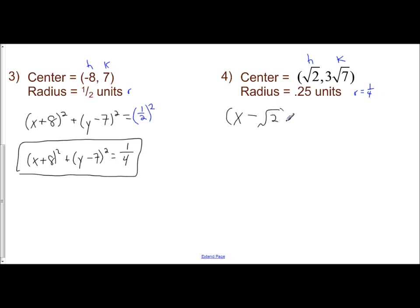All you do is x minus your h. Well, here, my h is radical 2. And square that. All I do is y minus my k. So y minus 3 radical 7. And square that. So was it any more difficult to have radicals as your center? No. It looks more complicated, but you just plug them in the formula as is. And then you're going to square your radius, which is 1 fourth.